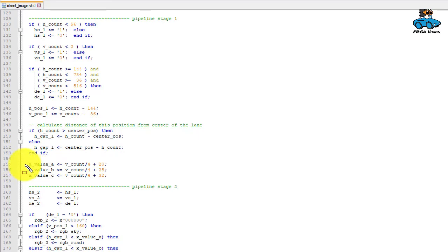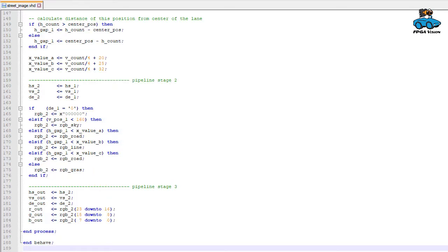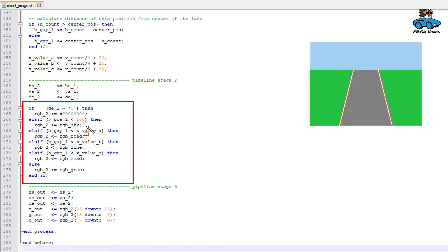For the street boundary we need three values which are 20, 25 and 32 pixel apart. Then we come to the next pipeline stage, and here we calculate the output pixel depending on the values we calculated earlier. If we are outside the active image, the output pixels are black. If the vertical position is smaller than 160, we are above the image and we output the RGB value for the sky. Now we use our values A, B, C and see if the pixel we have is belonging to the road, to the lane boundary, to the road, or outside the street and belongs to the grass.